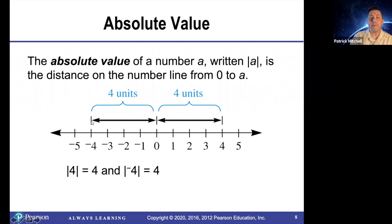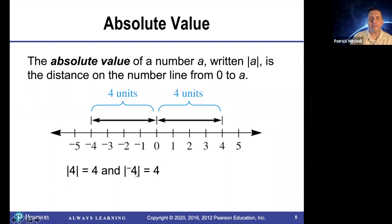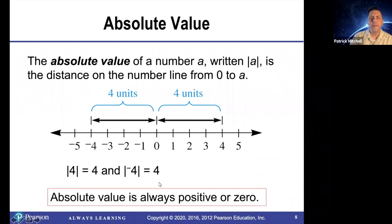which would be the absolute value of negative 4. Notice that since both of those distances are 4, the absolute value of 4 is 4, and the absolute value of negative 4 is 4. Notice that absolute value is always positive or 0 — it is never negative.